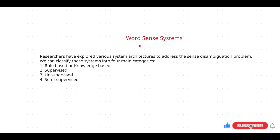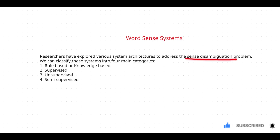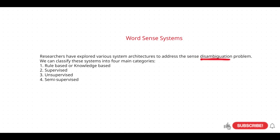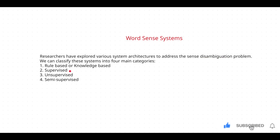Why we are using words and systems is that in some particular sentence there might be a disambiguation problem. In order to recover from this disambiguation problem, we use something called words and systems. These words and systems are divided into four main categories: rule-based, supervised, unsupervised, and semi-supervised.